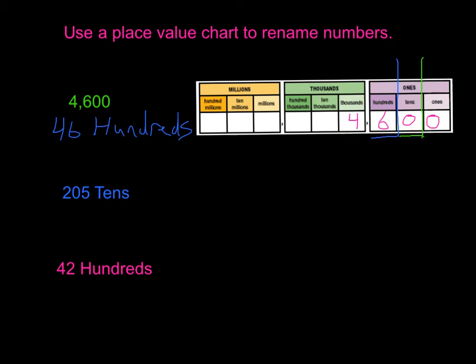So 4,600 is the same thing as 460 tens, or 460 groups of tens. If we multiplied 460 by 10, we would get 4,600. It's just a simple way in which we can use our place value chart to rename numbers.